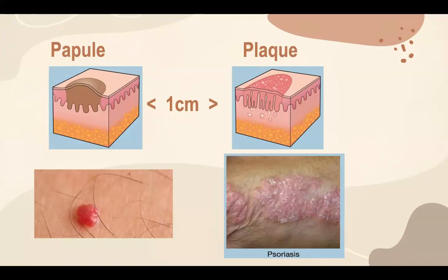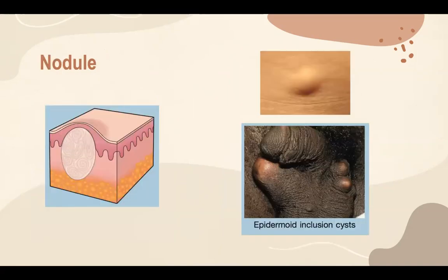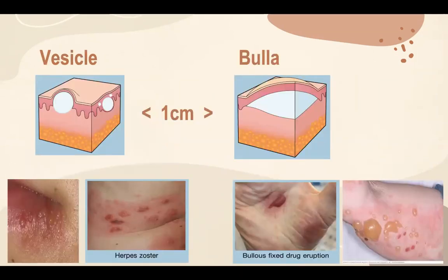A papule is a raised, palpable, circumscribed lesion that is less than one centimeter in diameter. An example of a papule is a cherry hemangioma. When the lesion is raised, palpable, and circumscribed but more than one centimeter in diameter, we call it a plaque. An example is this plaque psoriasis in the picture. A nodule is a raised, palpable, circumscribed lesion that is usually more than 1.5 centimeters in diameter. It has a larger volume than a papule and extends to the dermis or subcutaneous tissue, so it is usually better felt than seen. Examples of nodules include a lipoma or an epidermoid inclusion cyst.